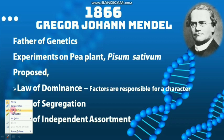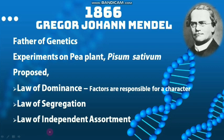During gamete formation, these factors will be segregated independently into different gametes. If considering more than one character, the factors of those characters will be independently assorted into gametes, where the assortment of one character will not interfere with the assortment of the other. However, Mendel's discoveries were hidden for around 50 years, and later in the 1900s, scientists like De Vries and others were rediscovering his experimental results.